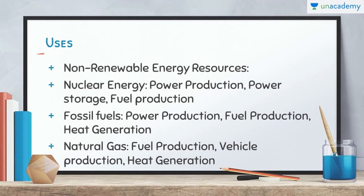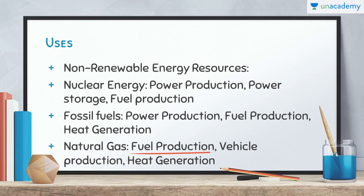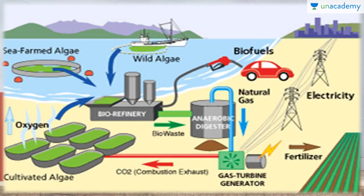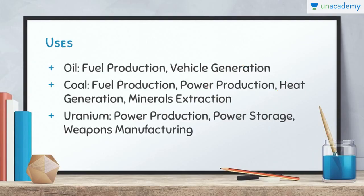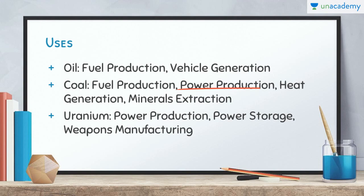So what are the uses of non-renewable energy resources? Nuclear energy is used for power production, power storage, and fuel production. Fossil fuels are used for power production, fuel production, and heat generation. Natural gas is used for fuel production, vehicle production, and heat generation. You can see the biomass, sea-farmed algae, and wild algae and how they are refined and used for various purposes. Oil is used for fuel production and vehicle regeneration. Coal is used for fuel production, power production, heat generation, and minerals extraction. Uranium is used for power production, power storage, and weapons manufacturing.